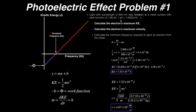I'm also given the work function, which I'm going to need. The work function is 1.6 electron volts, so I need to calculate it in joules. So 1.6 electron volts multiplied by the conversion factor 1.6 times 10 to the minus 19th joules per electron volt gives a work function of 2.56 times 10 to the minus 19th joules.